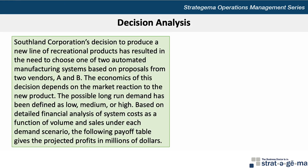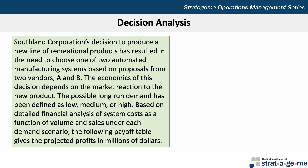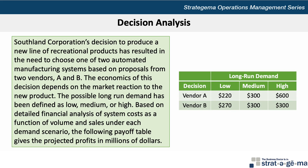Here's the data for our problem. Southland Corporation's decision to produce a new line of recreational products has resulted in the need to choose one of two automated manufacturing systems based on proposals from two vendors, A and B. The economics of this decision depends on the market reaction to the new product. The possible long-run demand has been identified as low, medium, or high. Based on the detailed financial analysis of system costs as a function of volume and sales under each demand scenario, this payoff table gives the projected profits in millions of dollars. The table shows payoffs ranging from as low as $220 million to as high as $600 million.